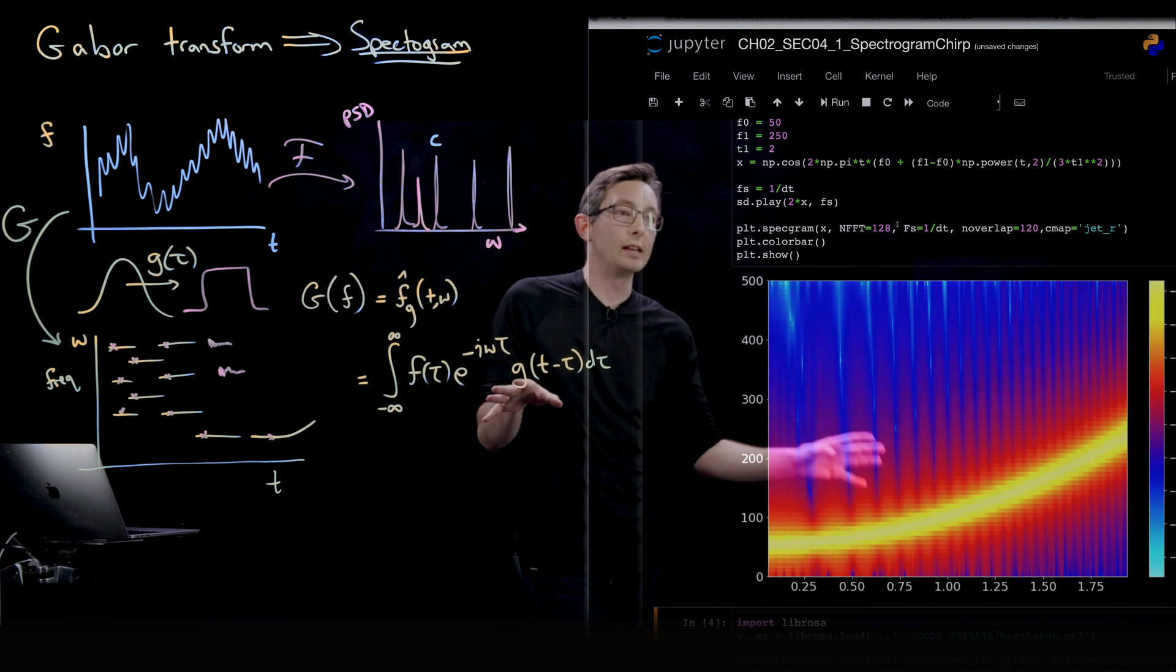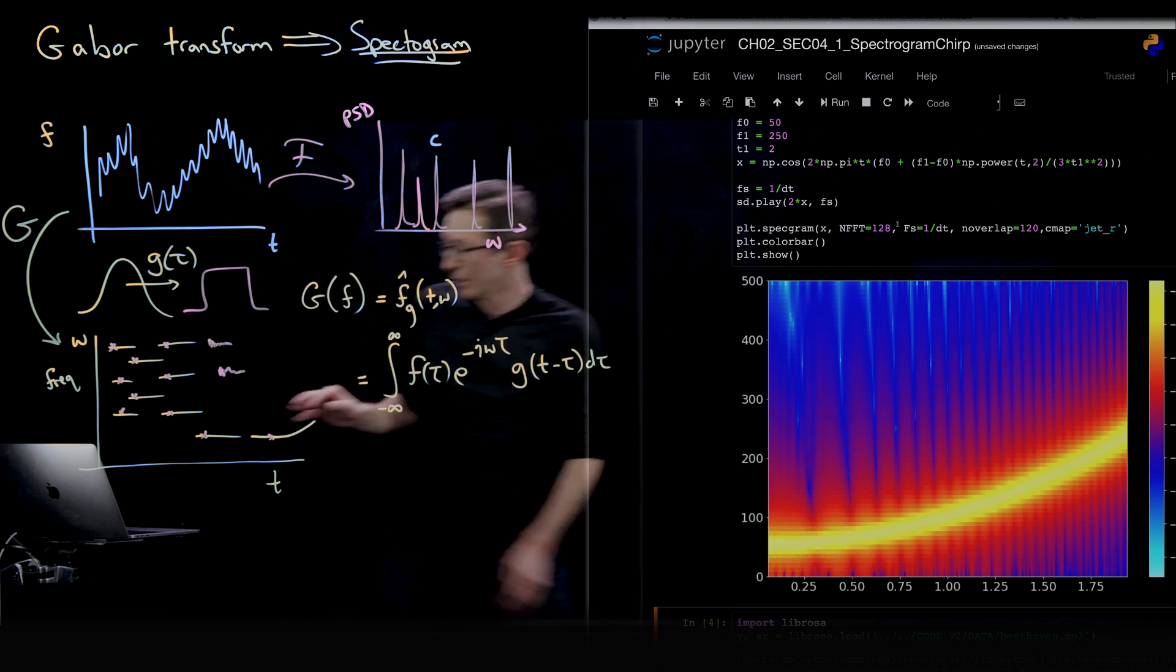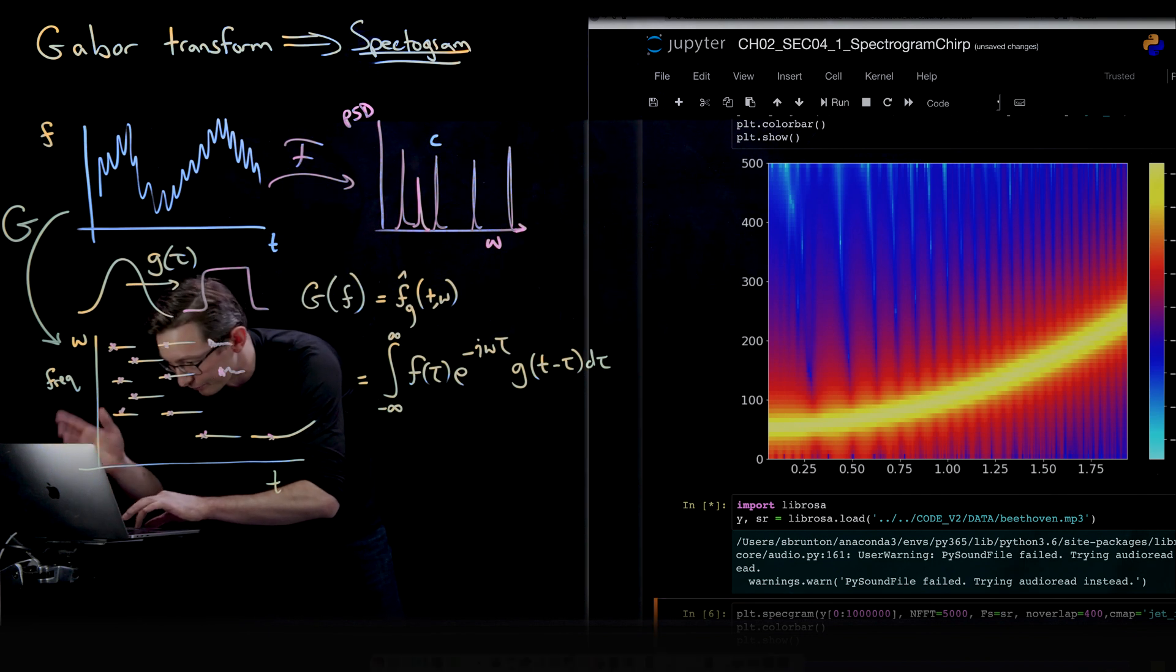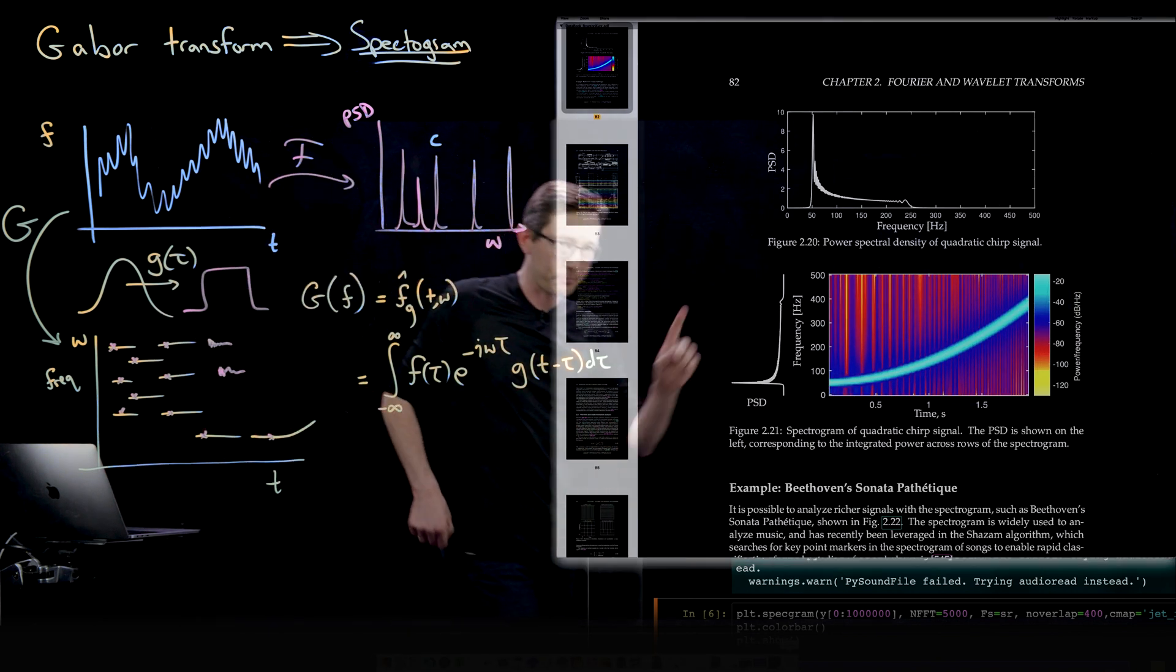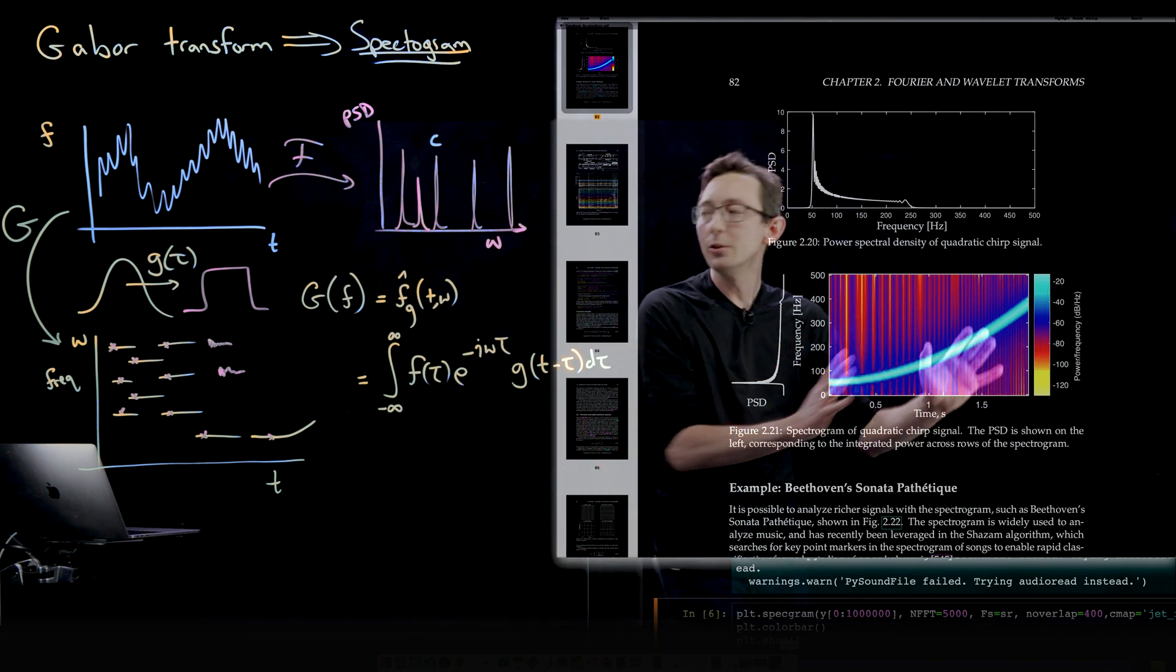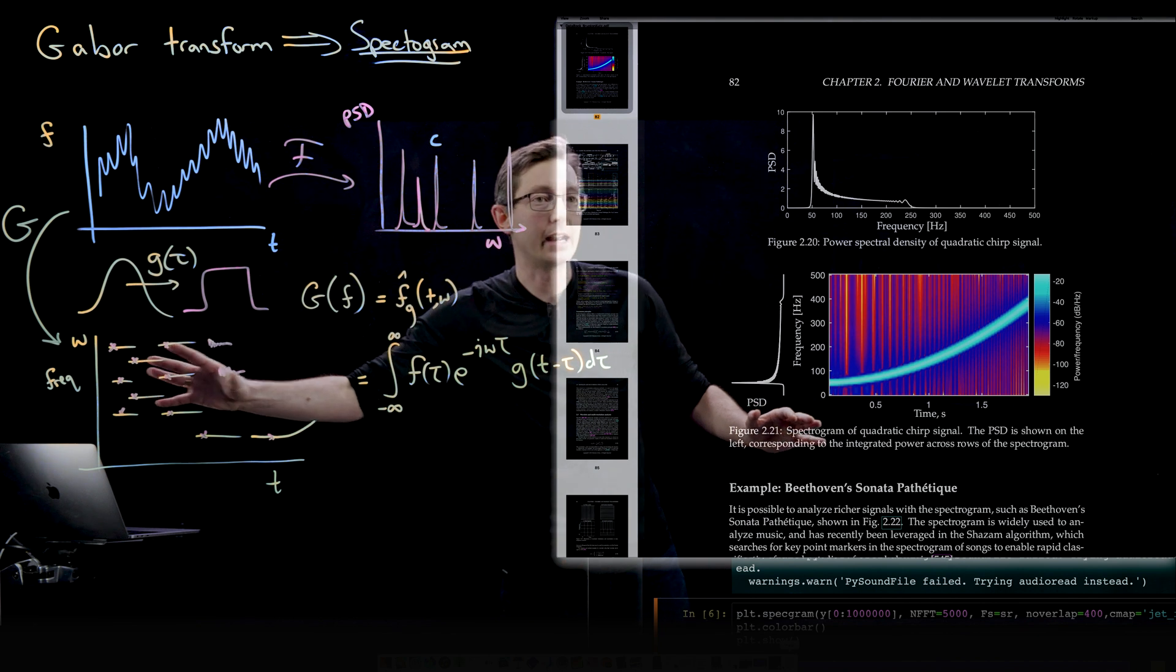So the next example I'm going to show you is pulling this Beethoven Sonata. Again, you can use this LibRosa package to load the file. And this is going to take a couple of seconds. So while it's loading, I'm going to show you in the data book.